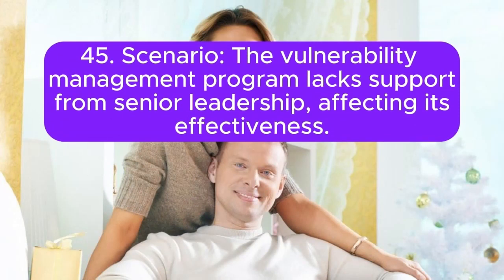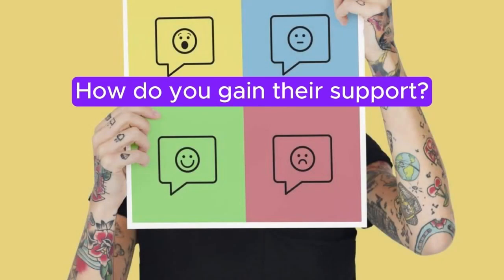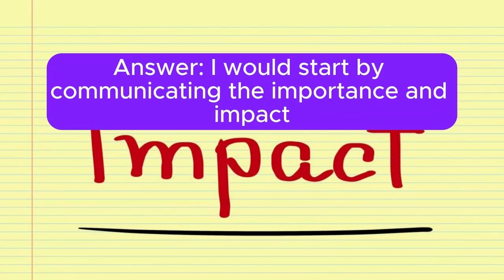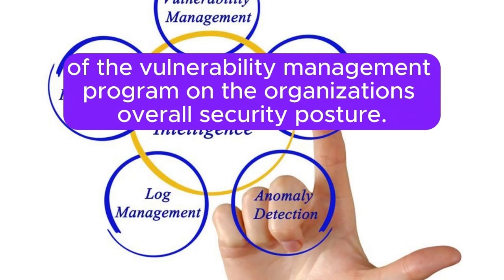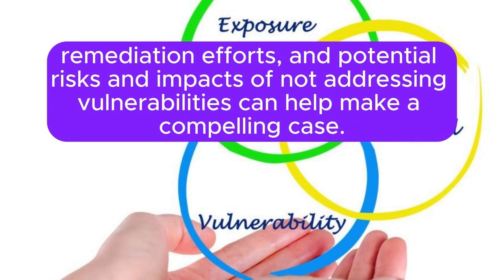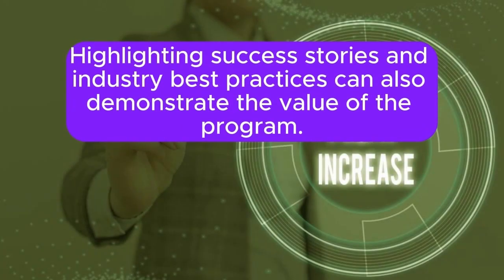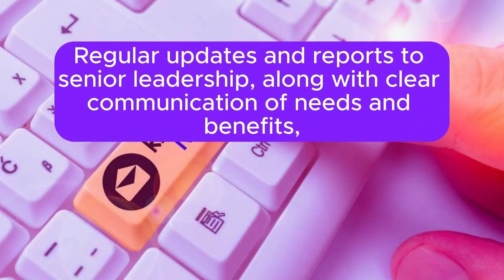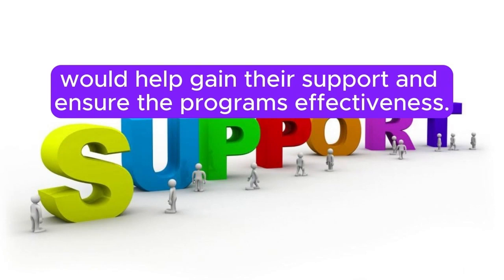Scenario 45: The vulnerability management program lacks support from senior leadership, affecting its effectiveness. How do you gain their support? I would start by communicating the importance and impact of the vulnerability management program on the organization's overall security posture. Presenting data on the number of vulnerabilities identified, remediation efforts, and potential risks and impacts of not addressing vulnerabilities can help make a compelling case. Highlighting success stories and industry best practices can also demonstrate the value of the program. Regular updates and reports to senior leadership, along with clear communication of needs and benefits, would help gain their support and ensure the program's effectiveness.